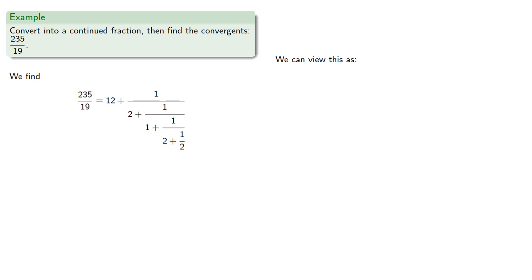While the Euclidean algorithm gives us the actual terms of our continued fraction expansion, it's helpful to see why it works. So we can view this as follows: the fraction 235 over 19.